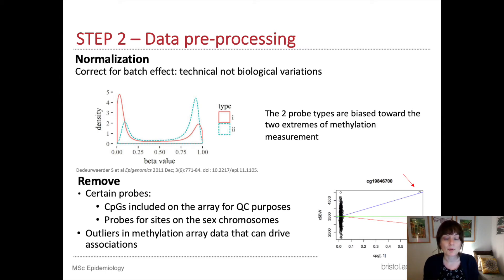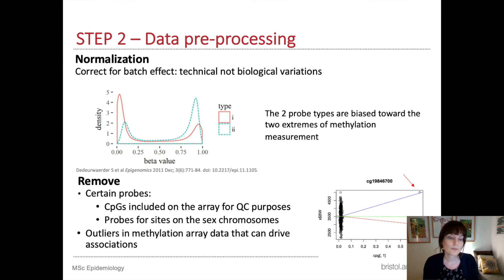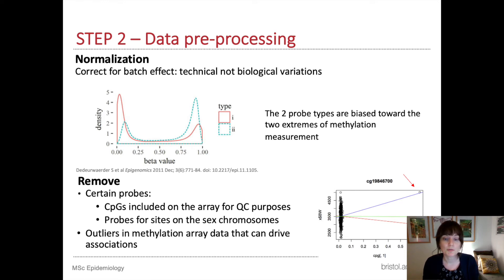We might want to remove other probes as well. For example, some probes have been found by other studies to be unreliable — maybe they're nonspecific, so they're actually measuring DNA methylation at multiple sites at once instead of the sites they're supposed to be specific for. Probes on the sex chromosomes are also often removed because these can give strange readings, partly because DNA methylation is used to silence one of the X chromosomes. And finally, we might want to remove individual values for some probes if they're outliers. Outliers in methylation data are quite common and might be driven by rare SNPs — rare differences in the underlying DNA — or by technical effects.